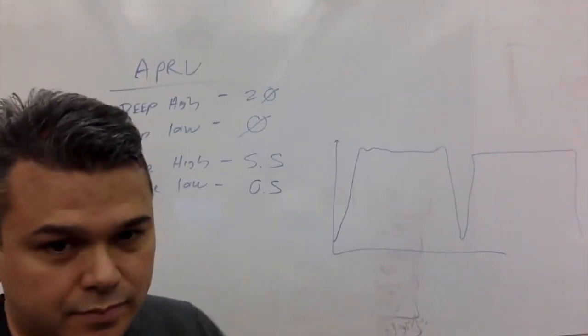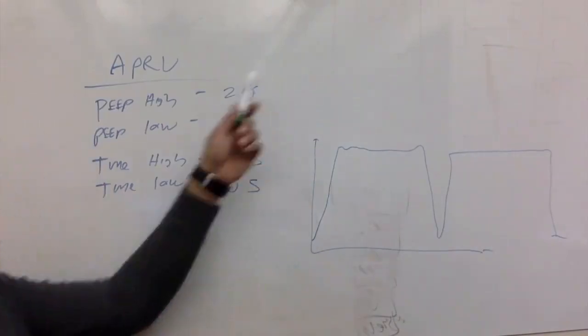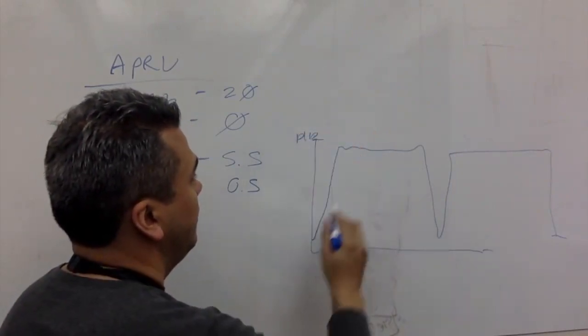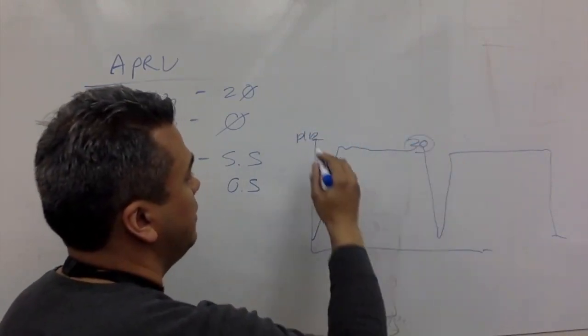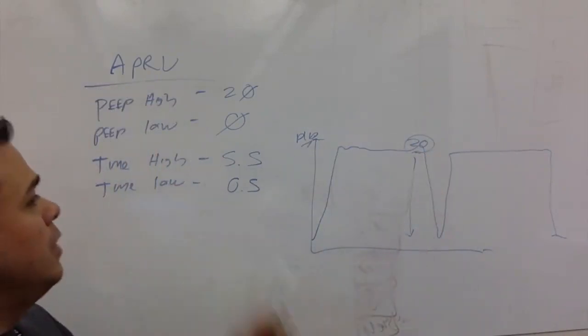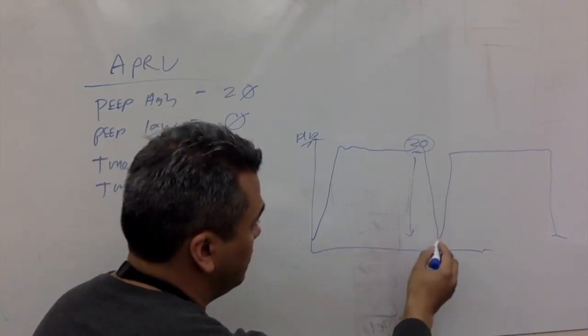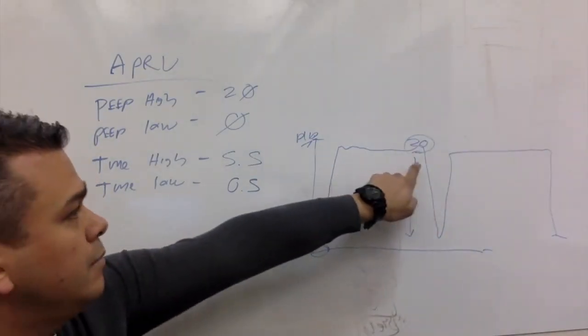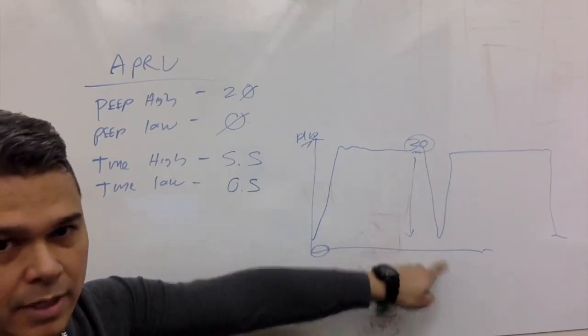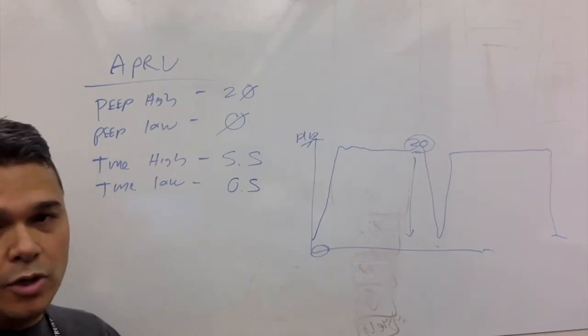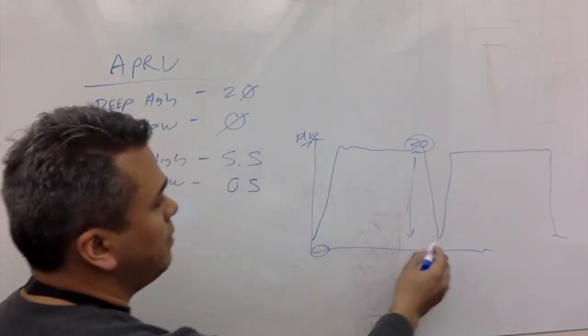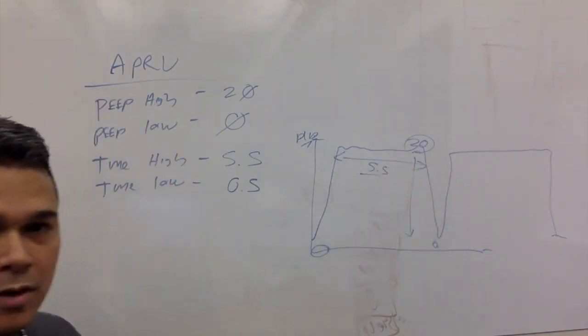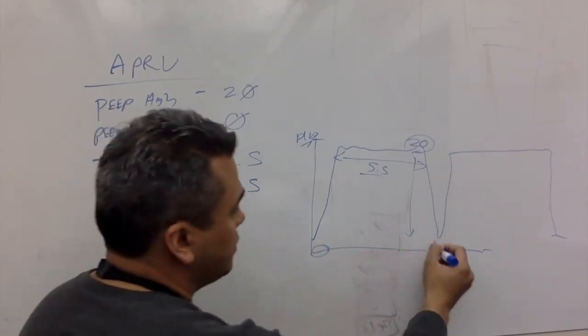The waveform for APRV looks like this. See that, there's the waveform. Now let's break down each of these, where these fit on the waveform. PEEP high right here, PEEP high 20 right here. PEEP low is here, zero. And you notice this is zero, but we're not reaching baseline because we don't give them that much time to exhale, so there's a little bit of air left in the alveoli.